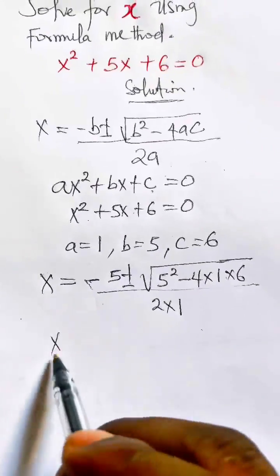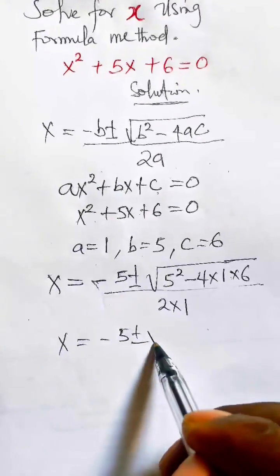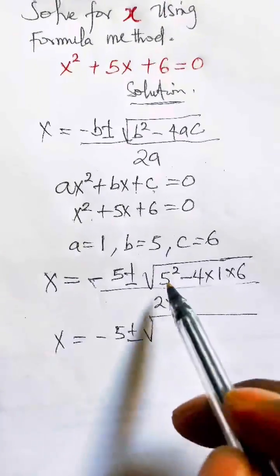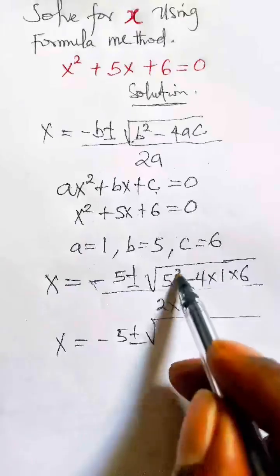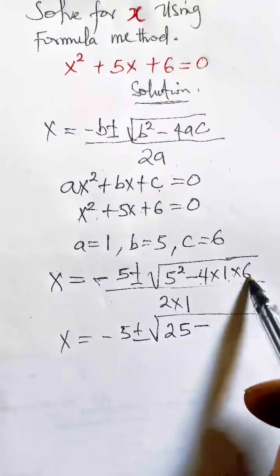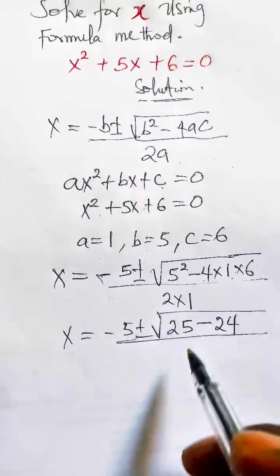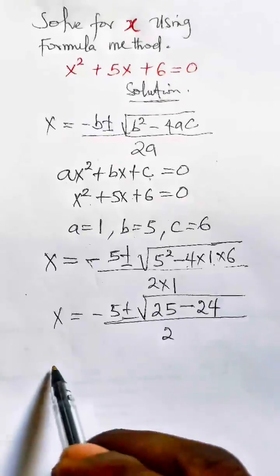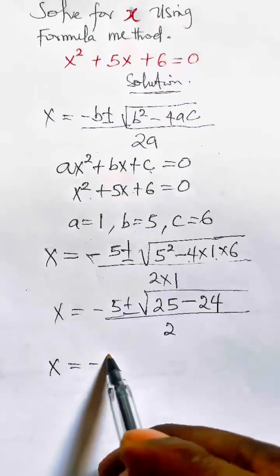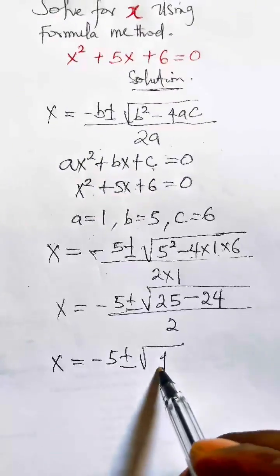Finally, x could be equal to minus 5 plus or minus, the square root of 5 squared is 25. 5 squared means 5 times 5 will be 25. Minus 4 times 1 is 4, 4 times 6 is 24, so write 24 here. All divided by 2 times 1 is 2. x could be equal to minus 5 plus or minus the square root of 25 minus 24 will give you 1.